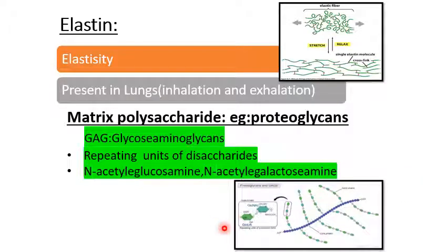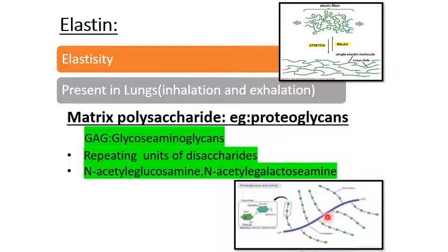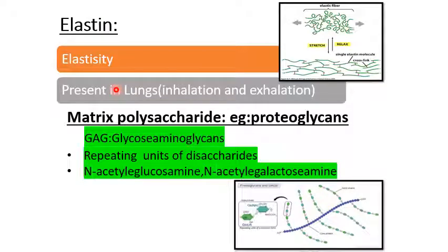There are repetitive disaccharide units, and you can see in this diagram the complete proteoglycan structure. This also helps in the interaction of the cell as well as the matrix. All of these proteins work together for cell and matrix interaction, and further proteins are studied in the next slides.